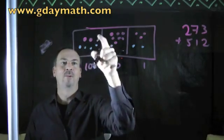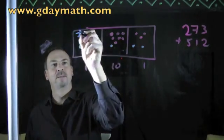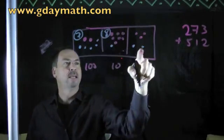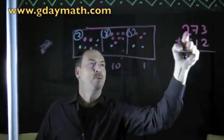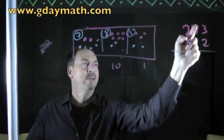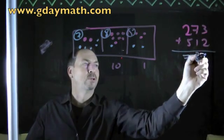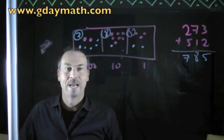And clearly we're getting, what is that, seven hundreds, we're getting eight tens and we're getting five ones. For example, two plus five is seven, seven plus one is eight, three plus two is five. Seven hundred and eighty-five.